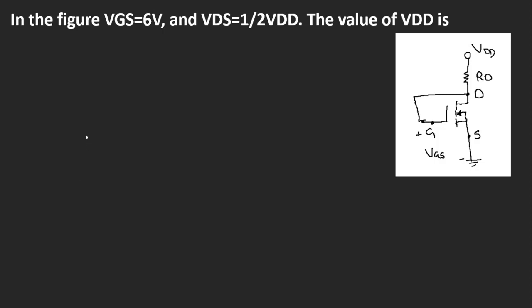Assalamu alaikum, welcome to Technically Explained. In this video we are going to do another problem on N-channel enhancement type MOSFET. We have a figure given, and it says that Vgs is equal to 6 volts and Vds is equal to half Vdd. So we need to find the value of Vdd, and we are given that Vgs is equal to 6 volts.